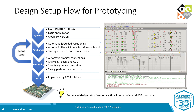Next is the partitioning stage, where we have several tools that aid the partitioning process with a high level of automation. You have automatic and guided partitioning, automatic place and route for partitions, and tools that help in tracing resources and connections. When the partitions are created, we go to the connecting stage, where we also need a high level of automation — that's why we have automatic physical connections, clock analysis, and clock domain crossing analysis.